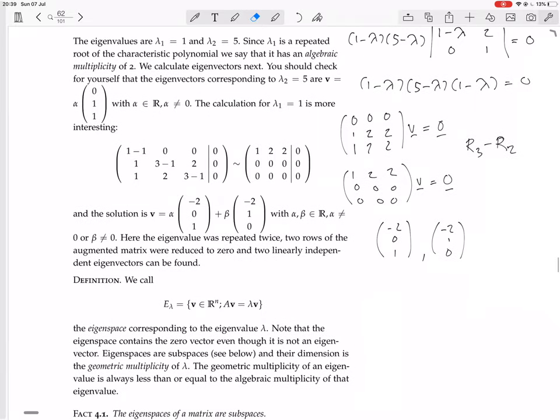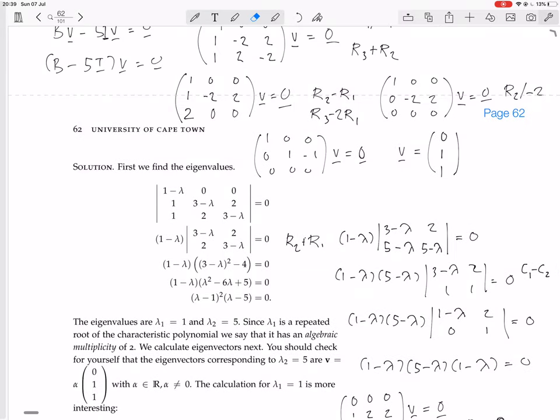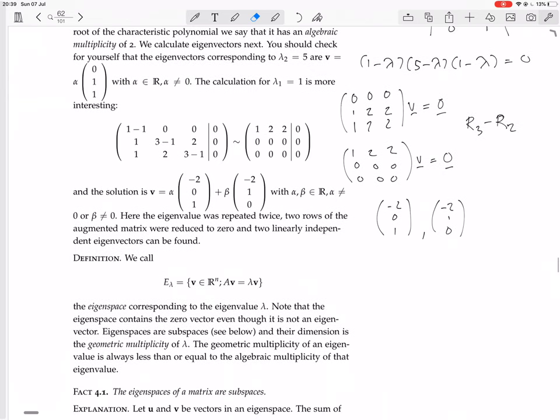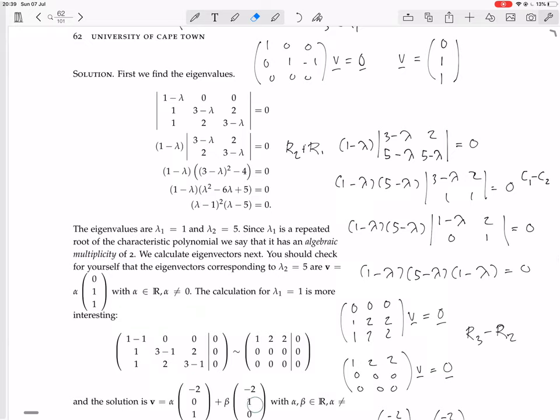Okay, so in this case, in this previous example, we had lambda 1 equals... We had lambda minus 1 squared, so this eigenvalue 1, remember, has an algebraic multiplicity of 2, and then we found that the eigenspace for it had two linearly independent eigenvectors. So the algebraic multiplicity, the geometric multiplicity for the eigenvalue 1 was then also 2. Okay, 5 just occurred once, so its algebraic multiplicity was 1, and so was its geometric multiplicity.